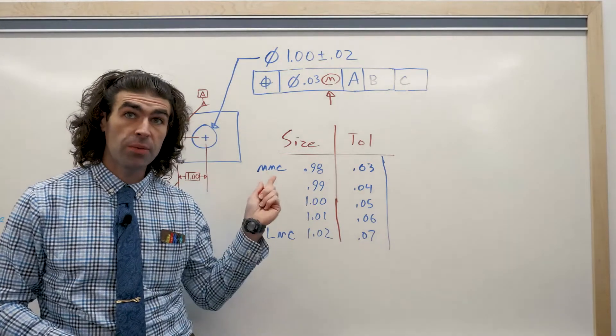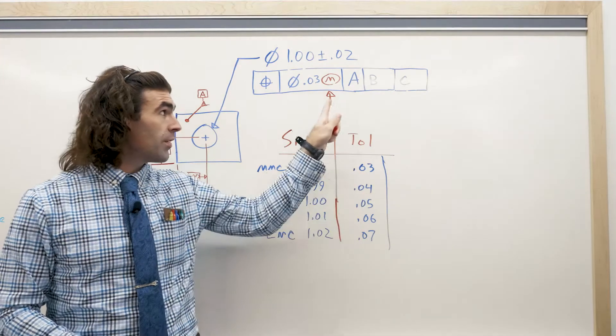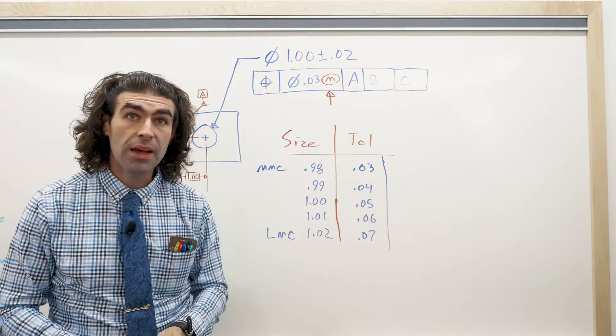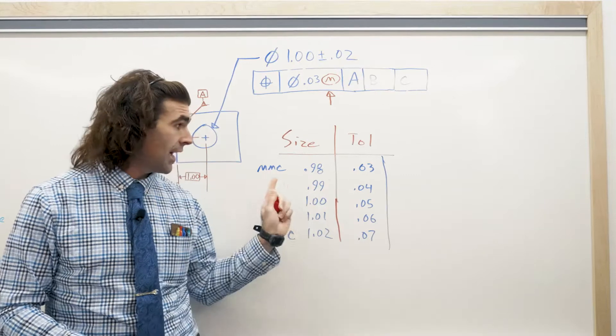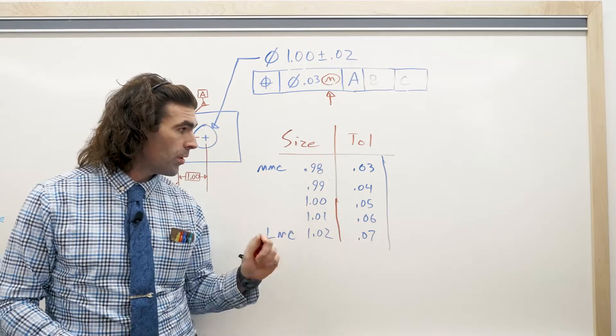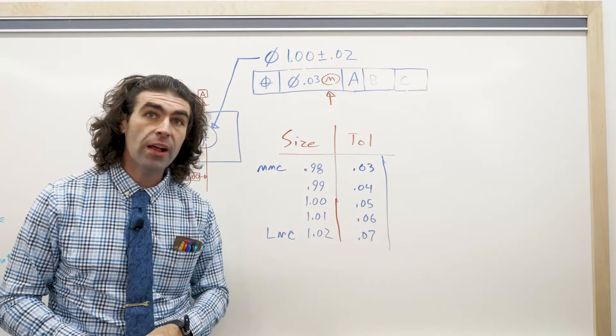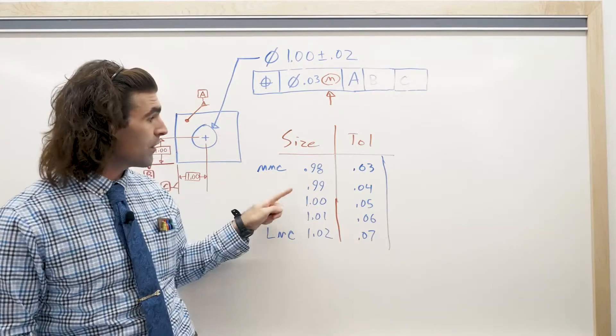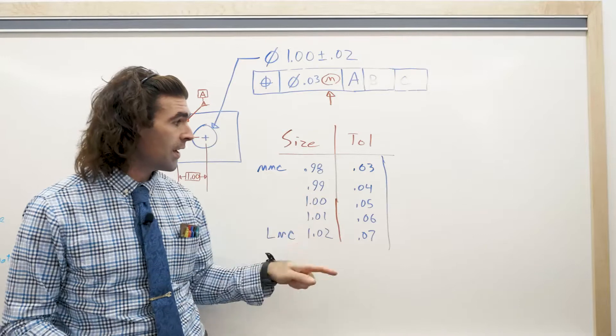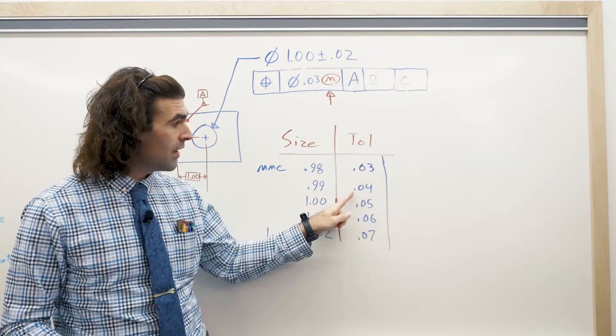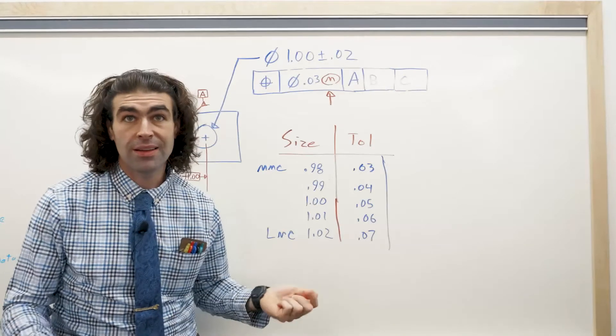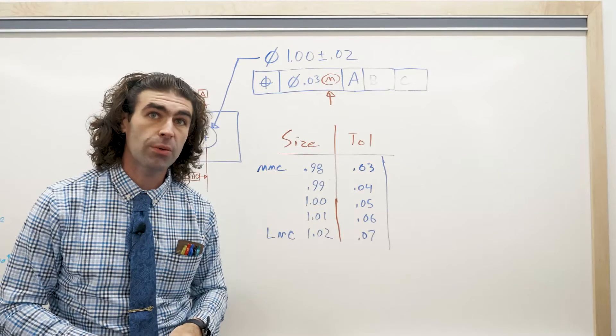This is how I like to remember it. If you imagine the MMC, the smallest size, the specified tolerance applies only there. As the actual size of the part moves toward LMC, you get more tolerance equal to the difference. So, the difference between 0.99 and 0.98 is 10 thousandths, you add that to the specified, you get 40 thousandths. Okay?